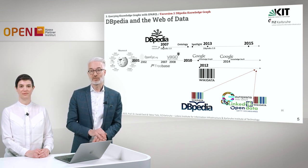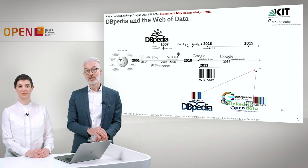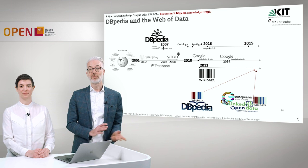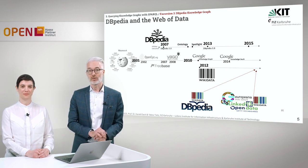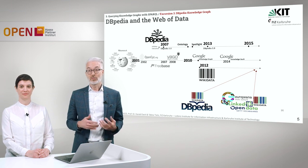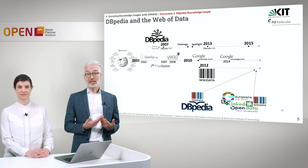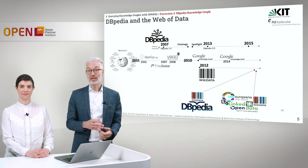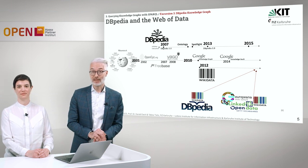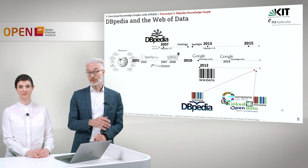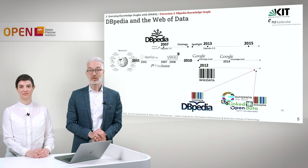There were several versions and DBpedia further developed. As further knowledge graphs were invented — for example, Freebase was there in 2007, YAGO in 2008 — and of course we all remember the Google Knowledge Graph in 2012, which was able to enhance Google search beyond what was available previously. Also Wikidata, introduced in 2012, is a very important topic we will cover in another excursion.